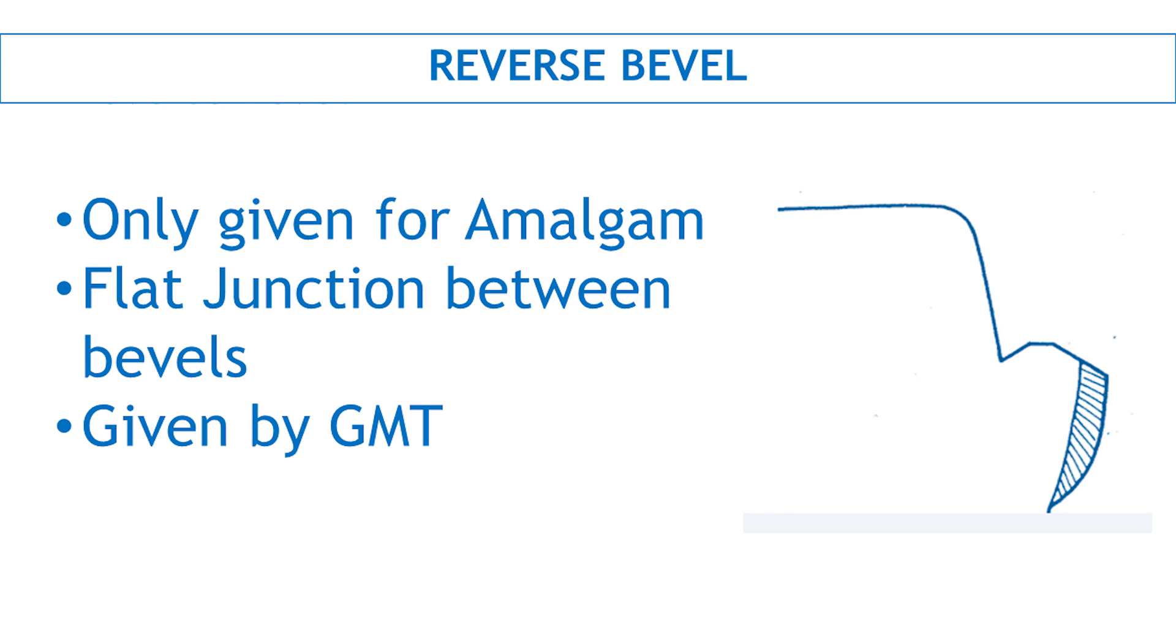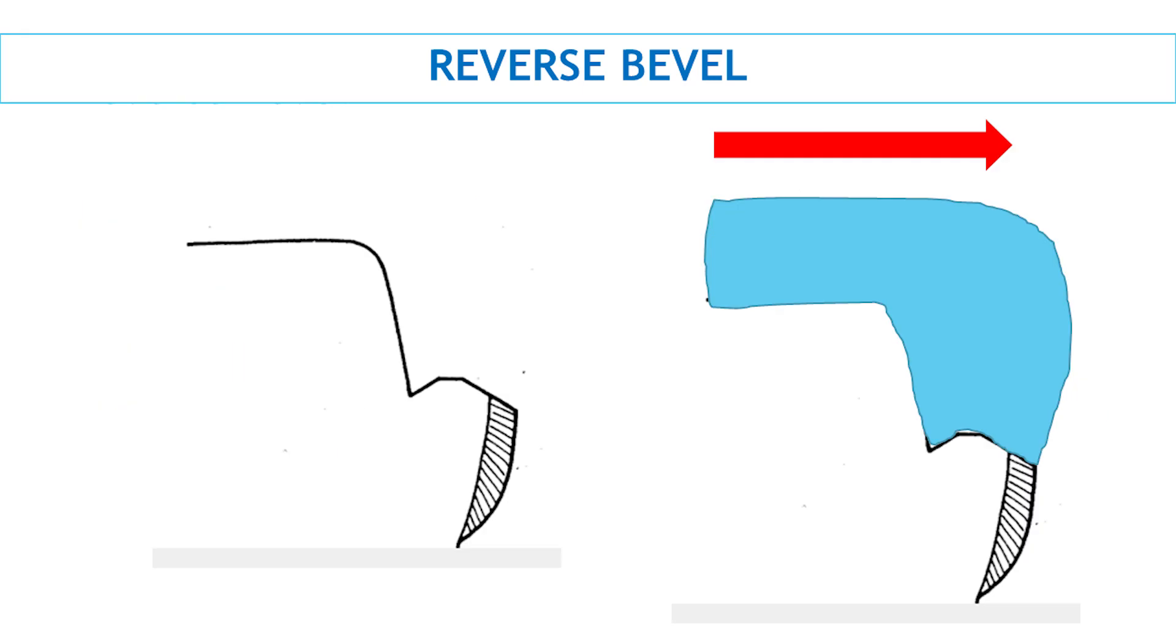This is exactly like a bevel at any margin but is given at the junction where the axial wall and gingival seat meet. This prevents the proximal movement of the restoration because it acts like a lock.